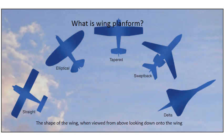You can see the examples here. You have a straight wing on the left, elliptical, tapered, swept back, and delta all the way to the right. Of course, a forward sweep would look like that swept back, only pointing forward. There are a lot of different ways that you can shape a wing, and that is wing planform.